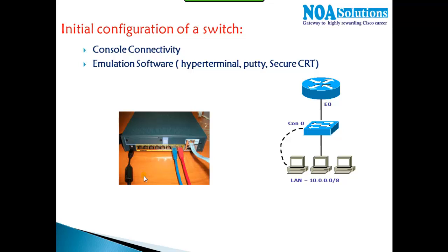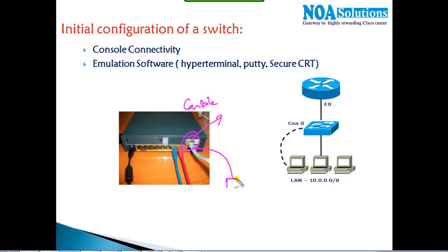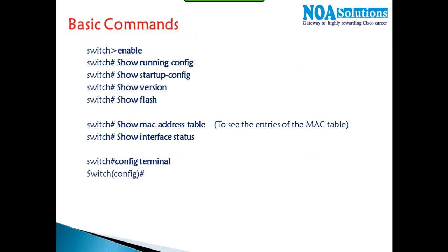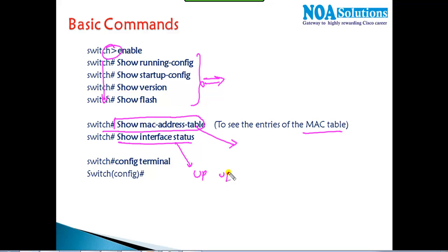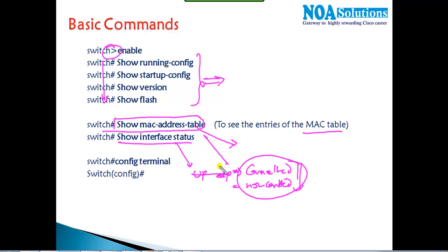For basic initial configurations on a switch, we do the same as on routers — connect via a console cable, with the RJ45 side going to the console port and the nine-pin side to the computer. The show commands are almost the same; we have user mode and privilege mode. The 'show mac address-table' command shows MAC table entries, and 'show interface status' shows whether an interface is connected, not connected, or in a disabled/shutdown state.